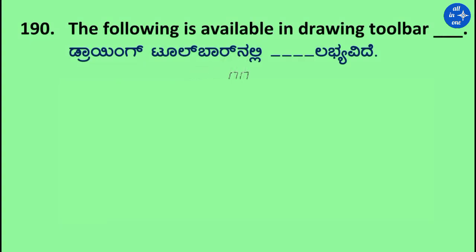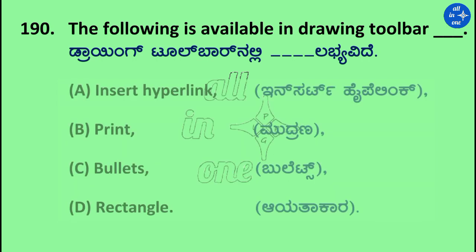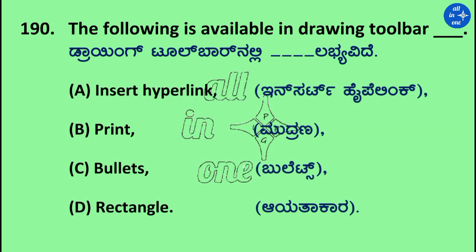Question: The following is available in the Drawing toolbar. Options: Insert Hyperlink, Print, Bullets, Rectangle. Right answer is Rectangle.